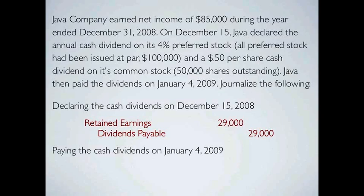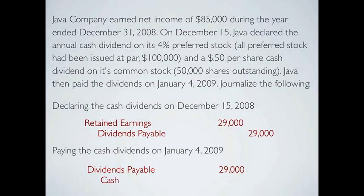On January 4th, 2009, we actually pay those dividends, so we no longer owe them. We're going to take the $29,000 out of dividends payable with a debit. And what are we crediting? Well, we're paying the dividends, therefore we are crediting cash for $29,000.